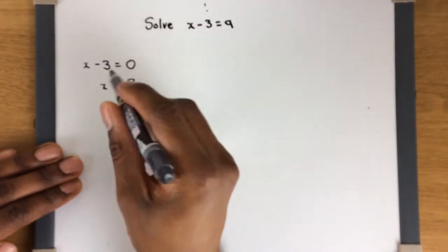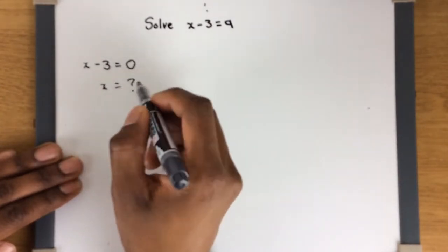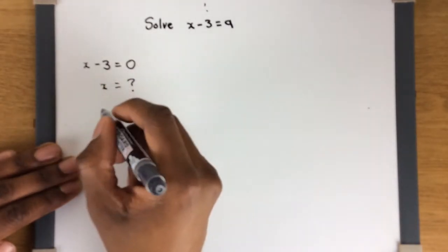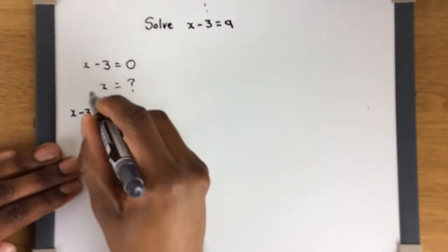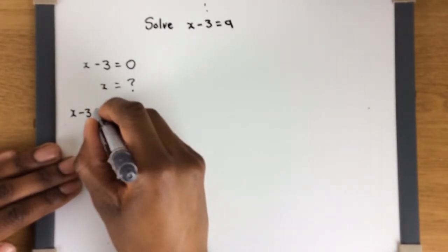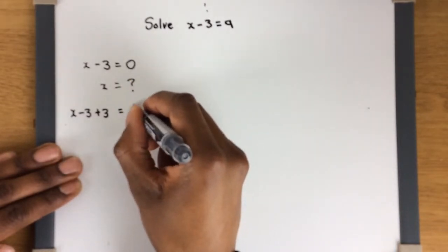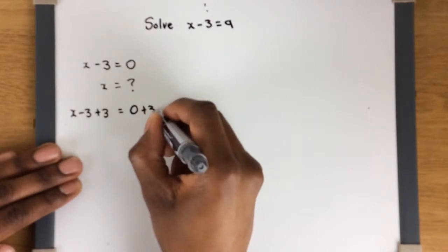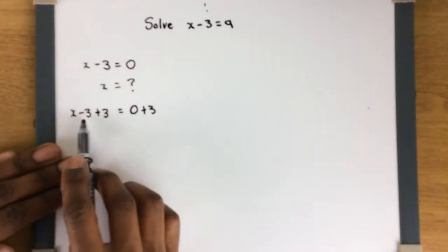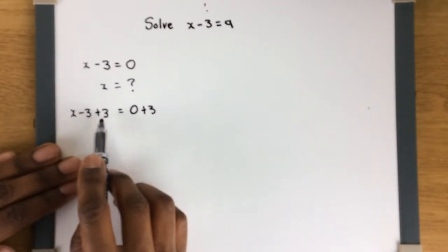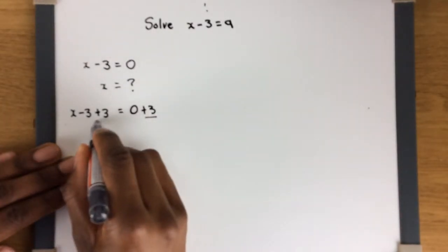In this particular example, to isolate x — to get x on its own — what you want to do is the reverse of what's currently here. So we've got x minus 3 equals 0. The opposite of minus 3 is plus 3, so we add plus 3 to this side. Because we've added plus 3 to this side, we have to add plus 3 to that side as well, giving us x minus 3 plus 3 equals 0 plus 3.